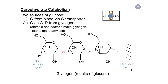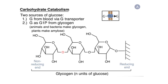Panel A shows the structure of glycogen, which consists of glucose monomeric units connected by a bond between the 1 and 4 carbons in the alpha configuration. Chemistry is going to be happening at the non-reducing end, which is to the left. The reducing end, to the right, is connected to a scaffolding protein called glycogenin. We'll come back to glycogenin later in the course.